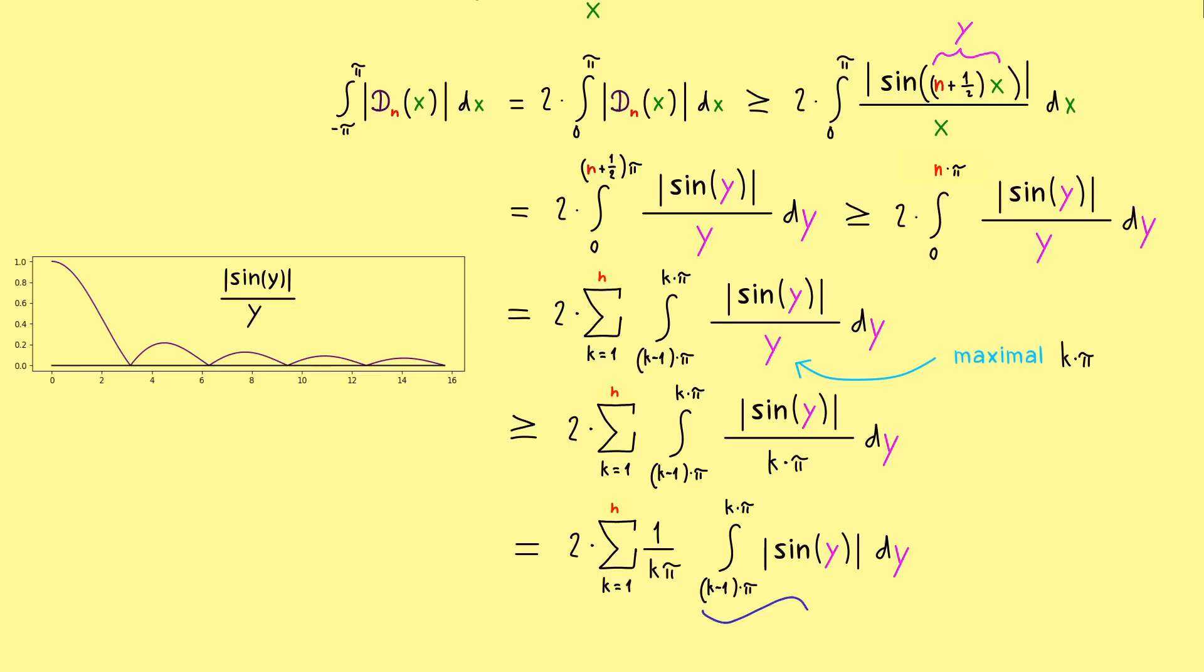This means what we get here is a constant factor times a sum over 1/k. And there we know this is exactly the harmonic sum, which is divergent. So if we send n to infinity, the right hand side goes to infinity, and therefore also the left hand side.